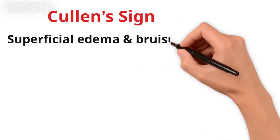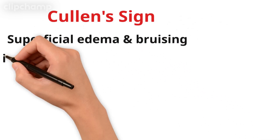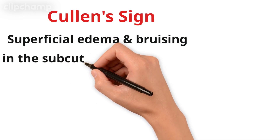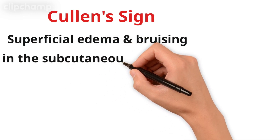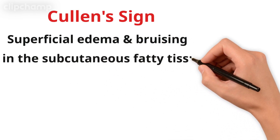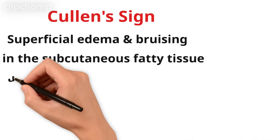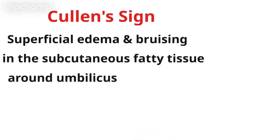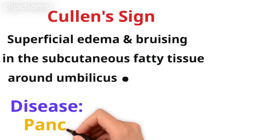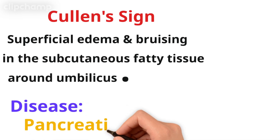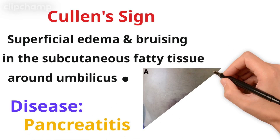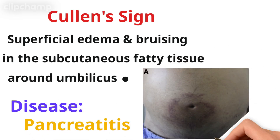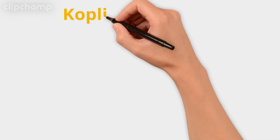The first most important sign is Cullen's sign. Cullen's sign is superficial edema or bruising in the subcutaneous fatty tissue around the umbilicus. It is the pathognomonic sign of acute pancreatitis. Here you can see the Cullen's sign.